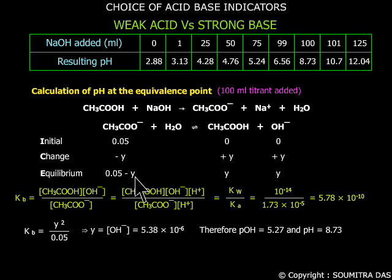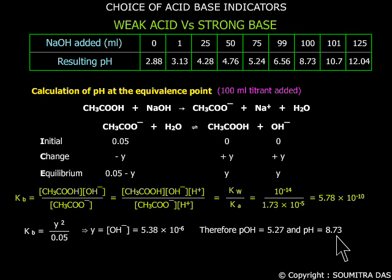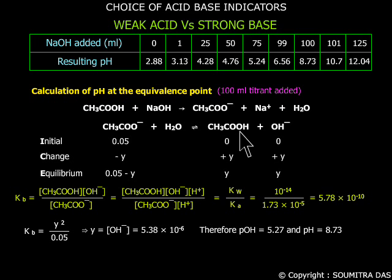Here Y, which is the concentration of OH⁻ ions, can be neglected because it is much less than 0.05. The concentration of OH⁻ ions is calculated to be equal to 5.38 × 10⁻⁶, which corresponds to a pH of 8.73. Remember that this equilibrium is considered at the equivalence point only and not before that, because the presence of acid shifts this equilibrium towards the left.